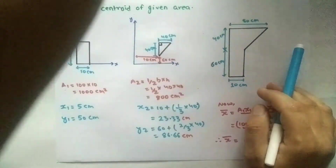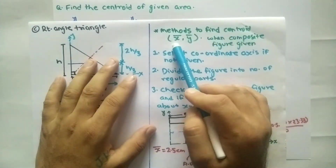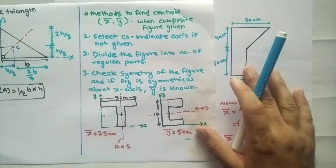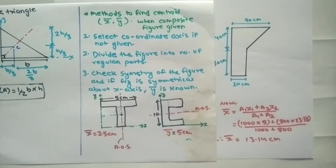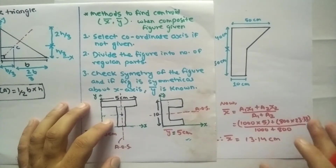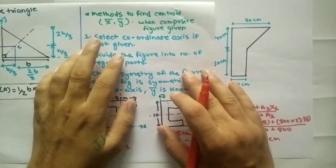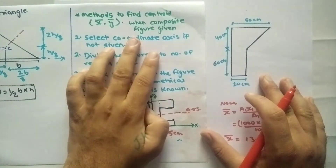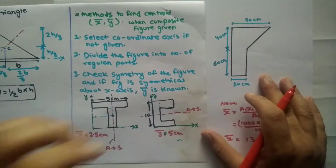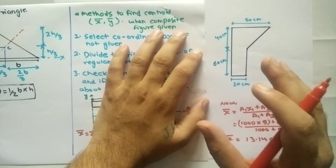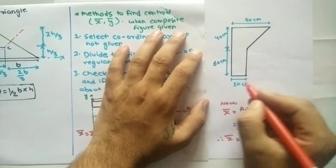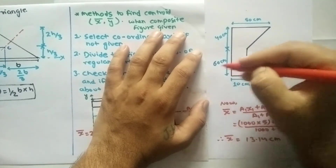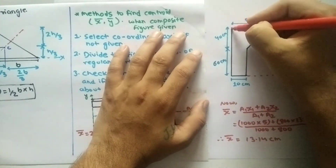This figure shows the method to find centroid — that is x-bar and y-bar — when a composite figure is given. The composite figure is the process. First, select the coordinate axis if not given. The coordinate axis can be defined as the x-axis and y-axis. The bottommost side is the x-axis and the leftmost side is the y-axis.